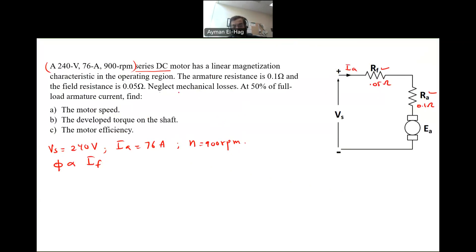Neglect mechanical losses. Mechanical losses are both the friction and the core. They are called mechanical losses or rotational losses. It has both the core and the friction.